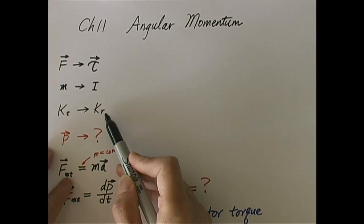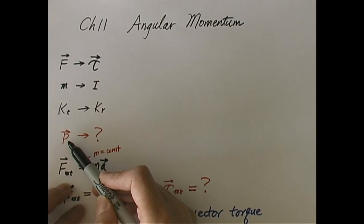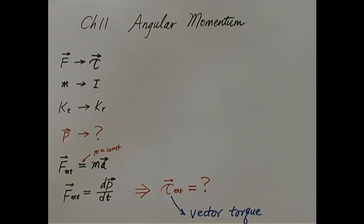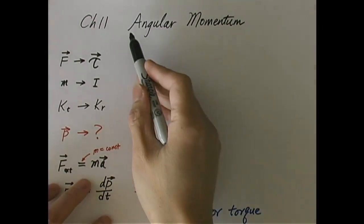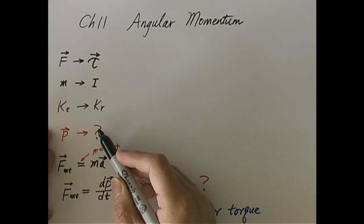Now we're going to continue with this analogy. One of the things we learned in the dynamics of particle motion — translational motion — is the concept of linear momentum, P, which is equal to m times v. We have not found the analogy of linear momentum in the case of rotation yet. So naturally, we would look at something called angular momentum, which would replace linear momentum for rotation.